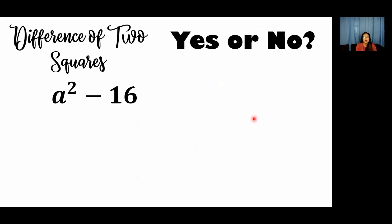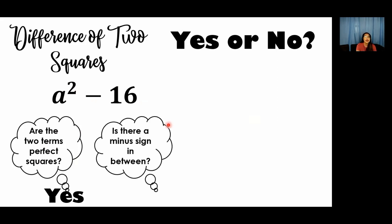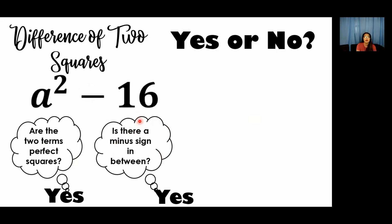Let us determine whether the following examples are a difference of two squares or not. The first one: a squared minus 16. First condition — are the two terms perfect squares? Yes, 16 has a square root, and a squared has an exponent divisible by 2. Second condition — is there a minus sign in between? Yes. Therefore, a squared minus 16 is a difference of two squares.